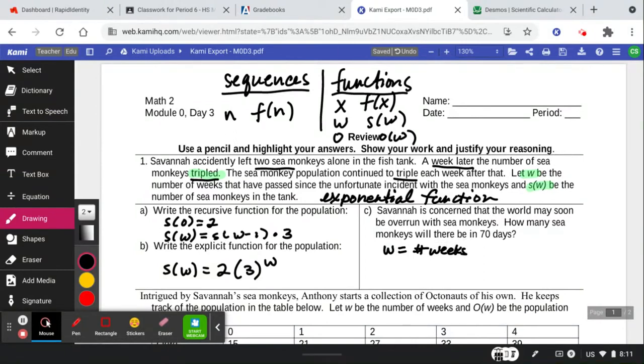So when this one asks us how many monkeys will there be in 70 days, we have to divide 70 by 7, 7 days in a week, to get 10 weeks. So when they're asking me to plug in, they're not wanting me to plug in 70. They're wanting me to plug in the number of weeks, which is 10 weeks.